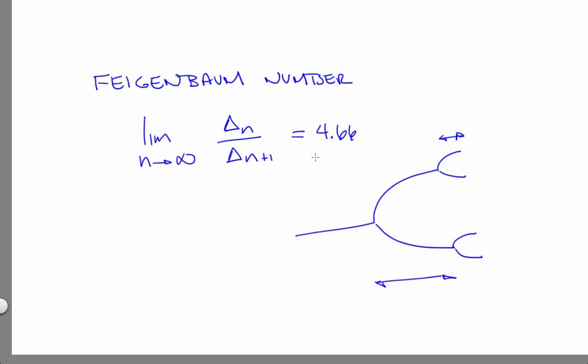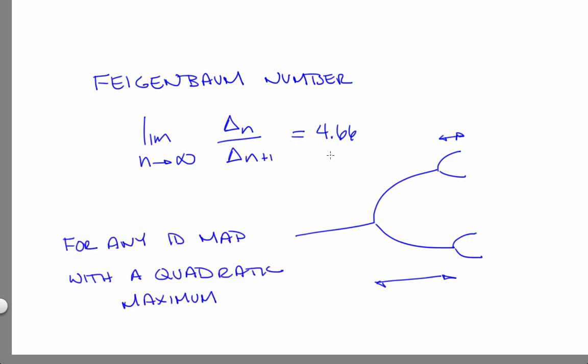Now what's really amazing about this result is that it holds for any 1D function with a quadratic maximum. That is, it goes well beyond the logistic map. It's also true for the sine map. It's also true for any other map that looks like a parabola near its maximum. Steve Strogatz says: the Feigenbaum number is a new physical constant as fundamental to 1D maps as pi is to circles. This is one manifestation of the universality of chaos.